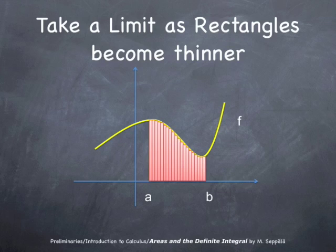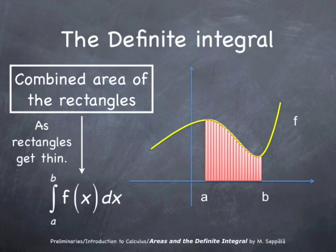And then we take a limit as the width of the rectangles becomes zero. So we compute the combined area of the rectangles shown in this picture. And then we let the width approach zero. And at the limit, we get something which is called the definite integral of the function f over the interval from a to b.